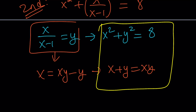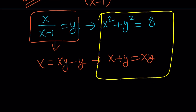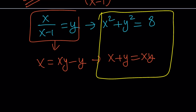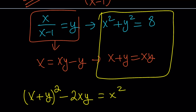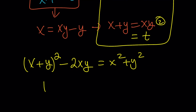We're going to use some identities. The first is the sum of squares identity: if you square x plus y, you get x squared plus 2xy plus y squared. Subtracting 2xy gives x squared plus y squared equals the quantity x plus y squared minus 2xy. This is a very helpful identity — make sure you know it if you're studying algebra. From the second equation, x plus y equals xy, so let's set both equal to t. This gives t squared minus 2t equals x squared plus y squared, which equals 8.